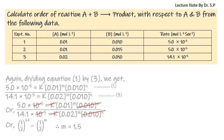Dividing [5.0 × 10⁻⁵ = k × (0.01)^m × (0.010)^n] by [14.1 × 10⁻⁵ = k × (0.02)^m × (0.010)^n]. Here 10⁻⁵ cancels with 10⁻⁵, k cancels with k, and (0.010)^n cancels with (0.010)^n, giving us (1/2)^1.5 = (1/2)^m.